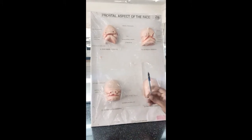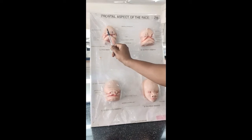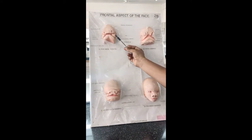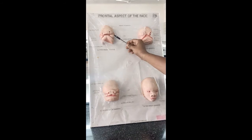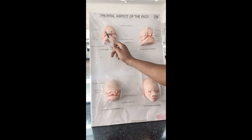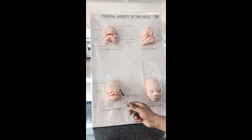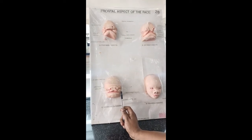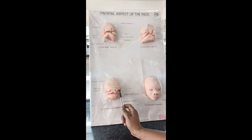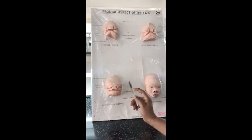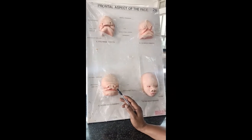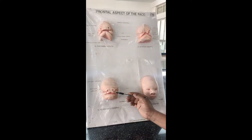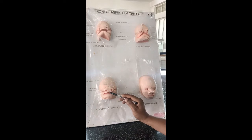The frontal process has been divided into the median nasal process and two lateral nasal processes. Because of the profuse development of the maxillary and mandibular processes, the two maxillary processes push the lateral nasal process so that the frontal nasal process is protruded forwards. The maxillary process develops and pushes the lateral nasal process towards the medial side on either side, and then this maxillary process fuses with the lateral nasal process.